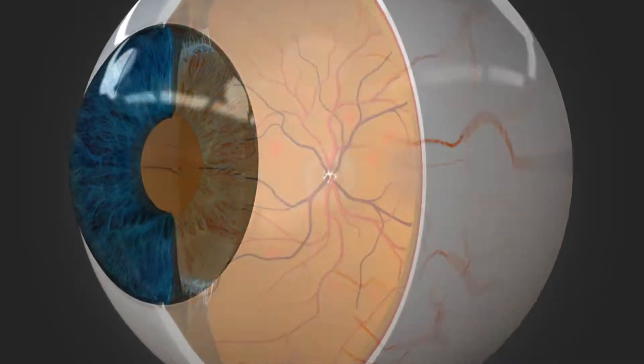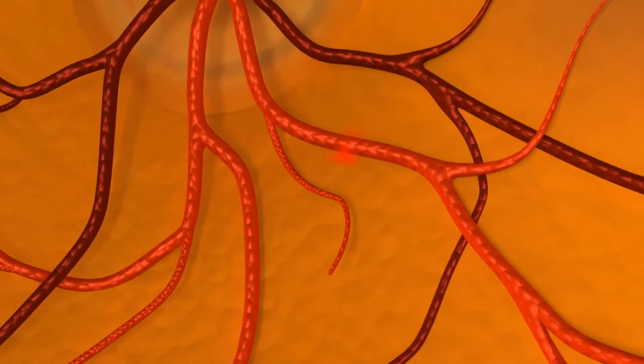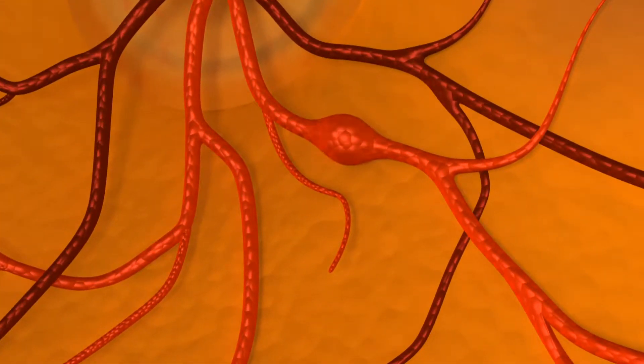Diabetes can affect the small blood vessels located in the back of the eye. The walls of these blood vessels can become weak, leading to an aneurysm.